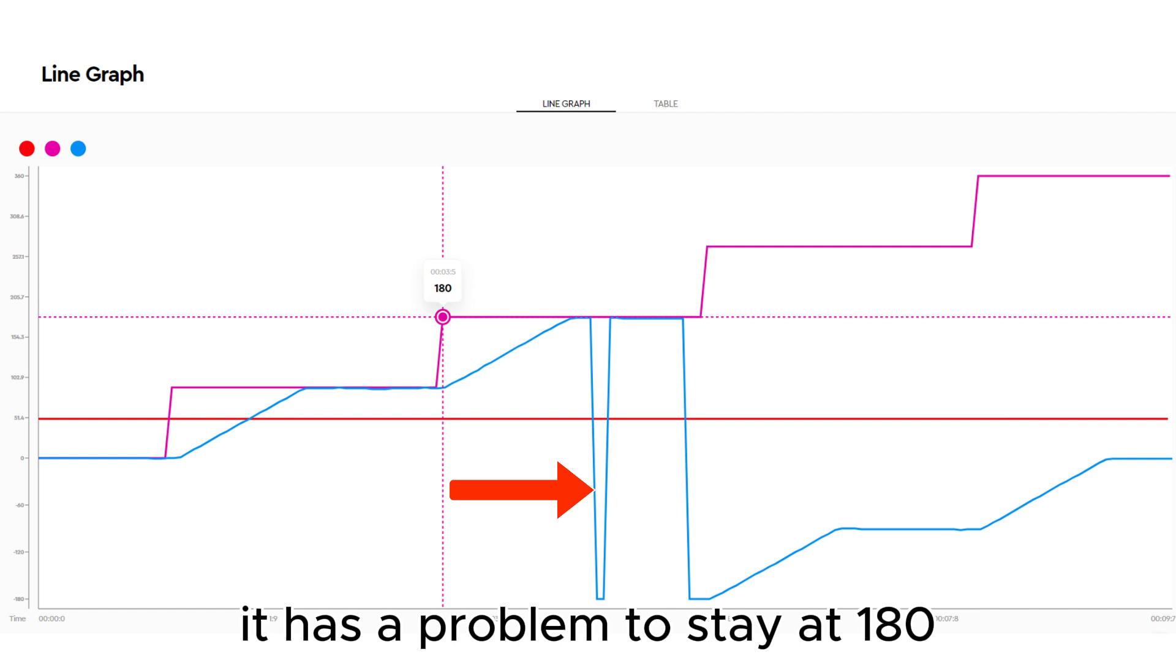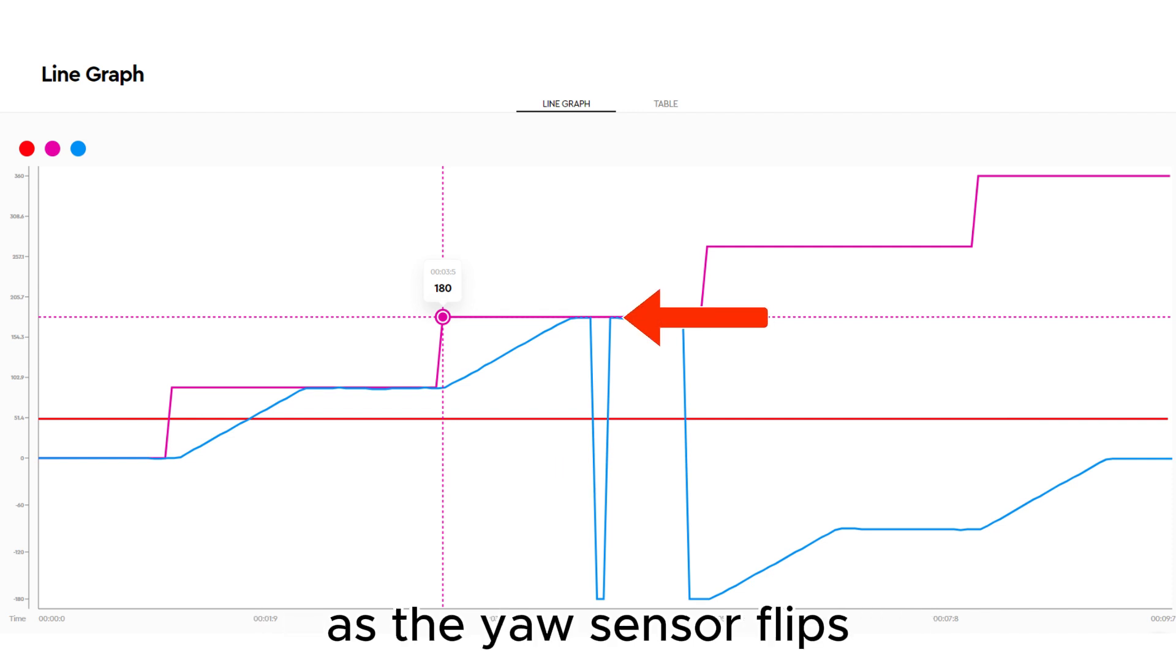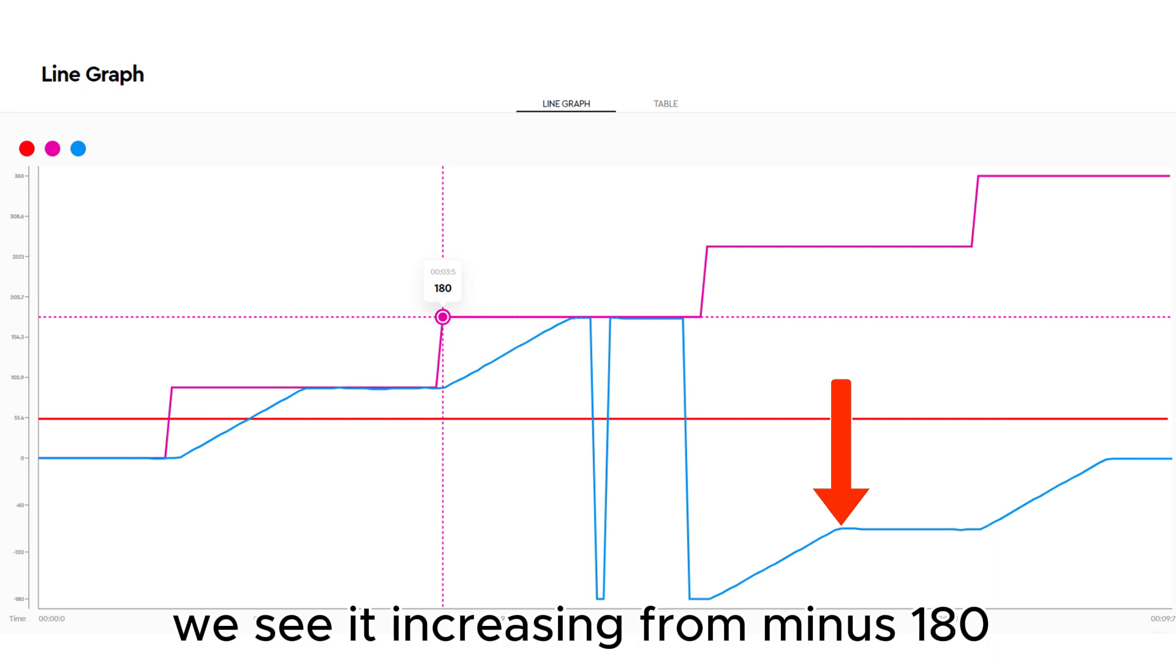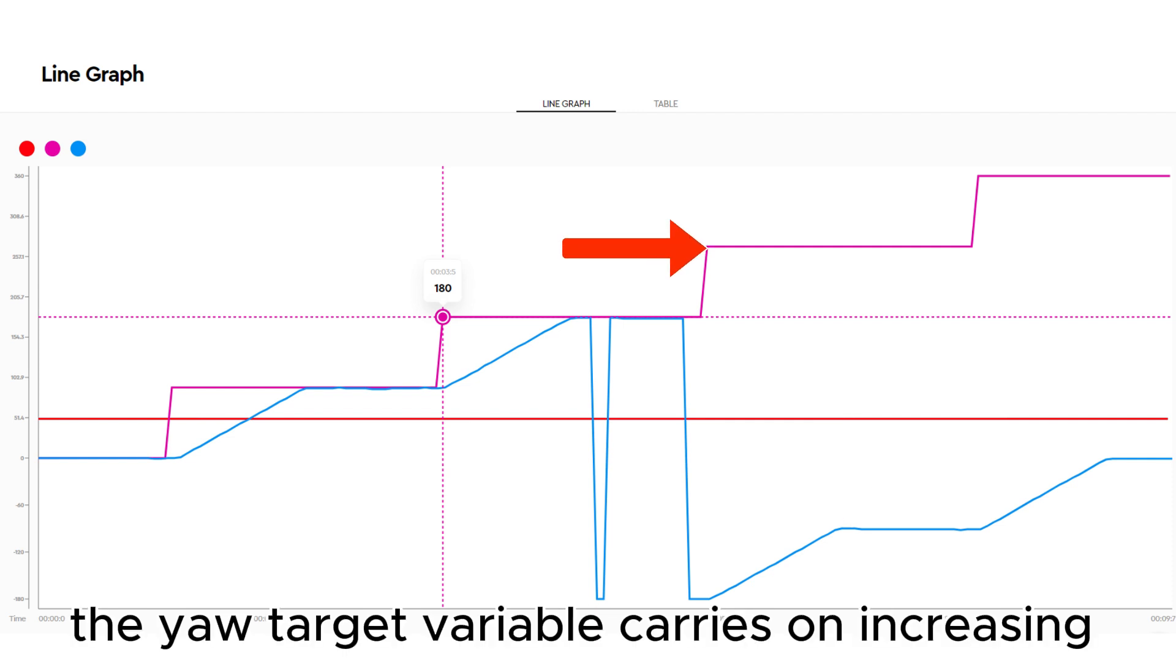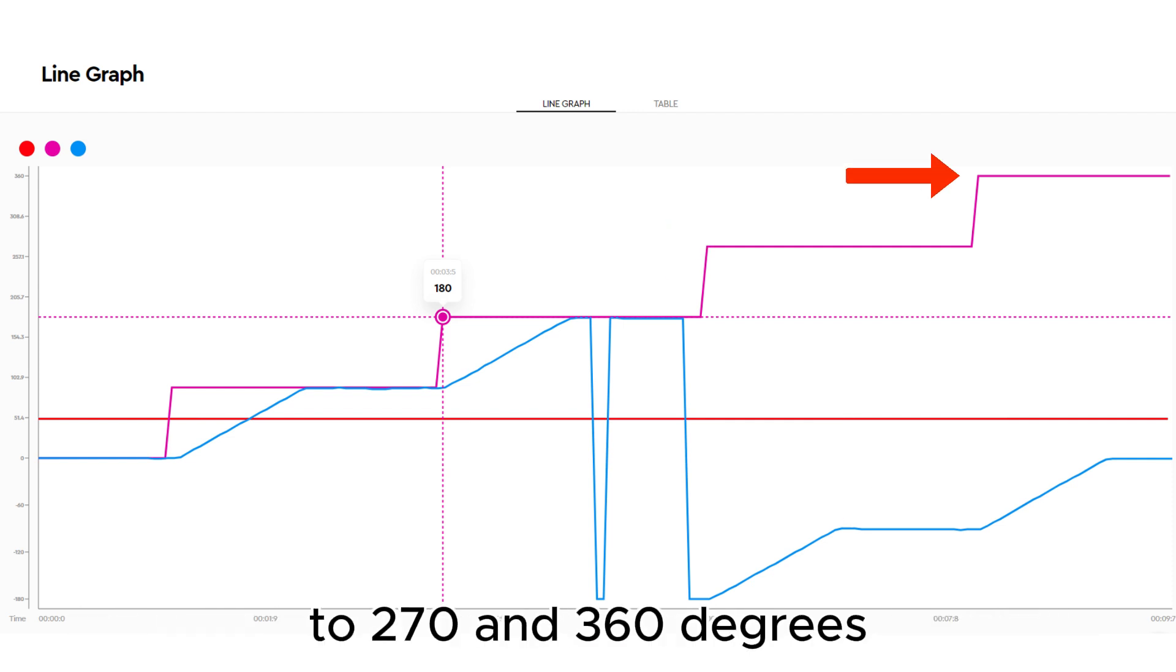It has a problem to stay at 180 as the yaw sensor flips between plus and minus 180. We see it increasing from minus 180 up to minus 90 after the third turn. The yaw target variable carries on increasing to 270 and 360 degrees.